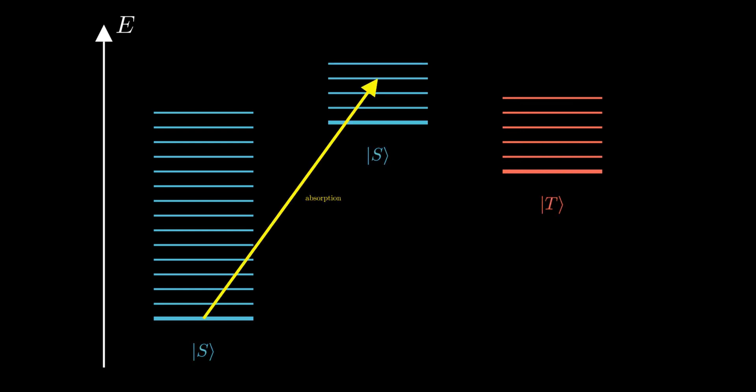After absorbing a photon, it is excited into a higher energy level. The molecule can then lose vibrational energy through collisions with surrounding molecules.